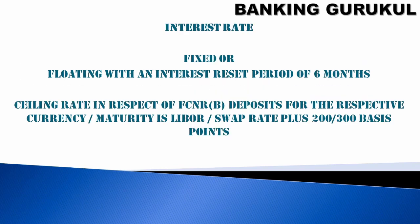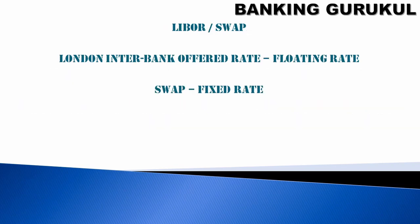For interest rates, you have a fixed rate and a floating rate. The floating rate will be reset every six months — meaning the rate can change or remain the same every six months. The ceiling rate for FCNR deposits is the maturity LIBOR swap rate plus 200 or 300 basis points. LIBOR stands for London Interbank Offered Rate and is a floating rate, while SWAP is a fixed rate.